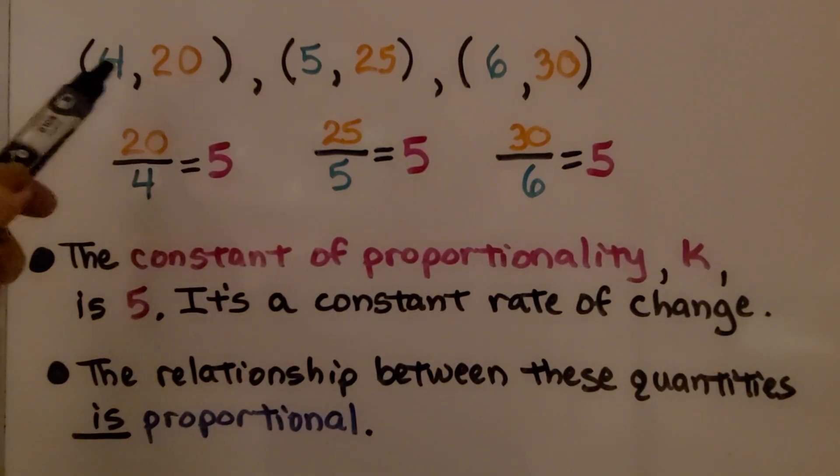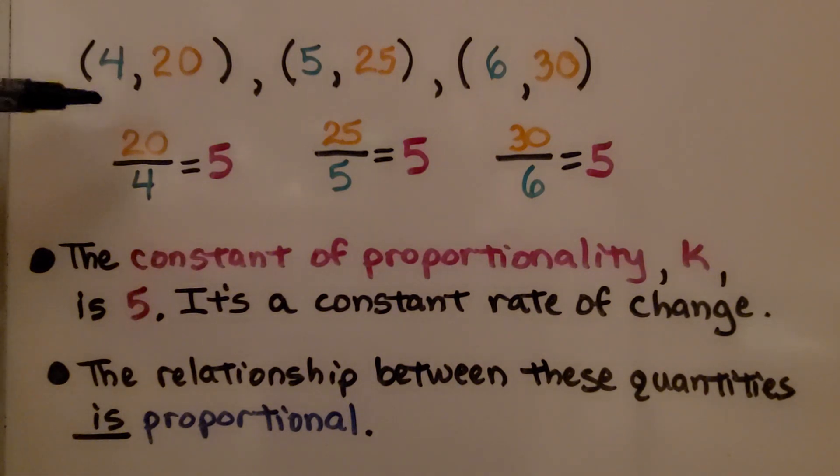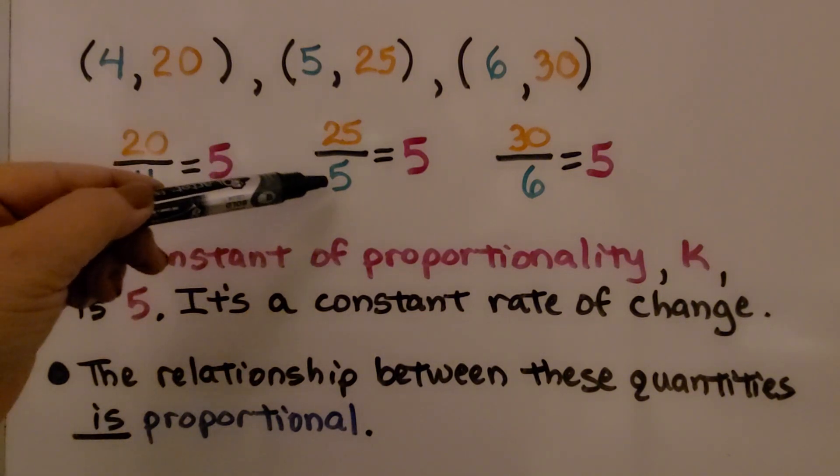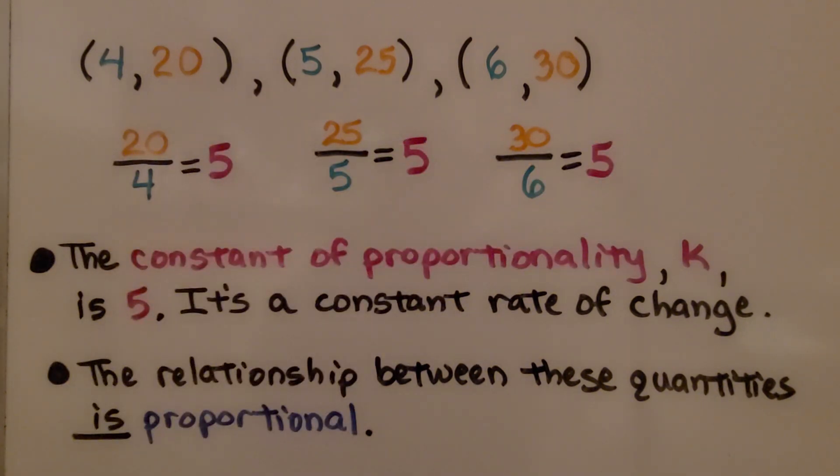Here we have some ordered pairs, and they can be graphed on a coordinate plane. We have 20 divided by 4, that's equal to 5, and 25 divided by 5, that's equal to 5, and 30 divided by 6, that's equal to 5.